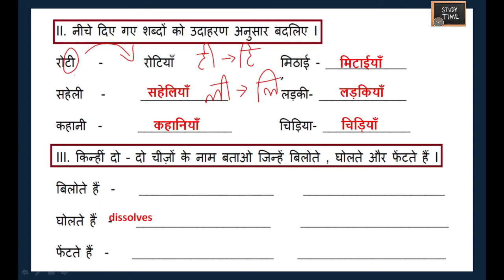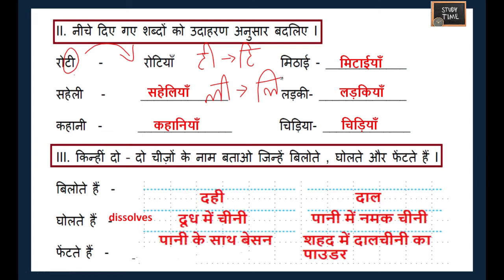The next exercise asks you to name things that we 'bolte', 'bilote', 'golte', and 'faite' hain. For bilote (churning), the answers are dahi and dal. For golte, whichever dissolves — doodh mein chini (sugar in milk), paani mein namak (salt in water), paani ke saath besan, shahad mein dal chini ka powder — these are examples of things that dissolve.